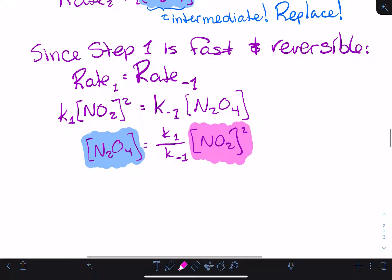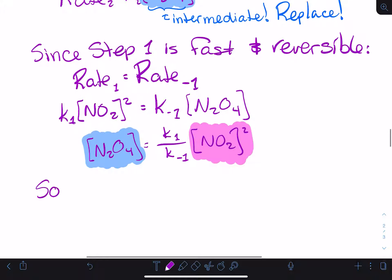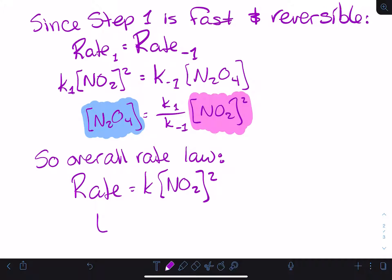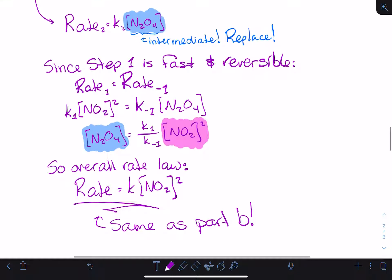If we do that, our overall rate law is going to be that the rate equals K times NO2 squared, which is also the same as in part B. So this is also potentially consistent.